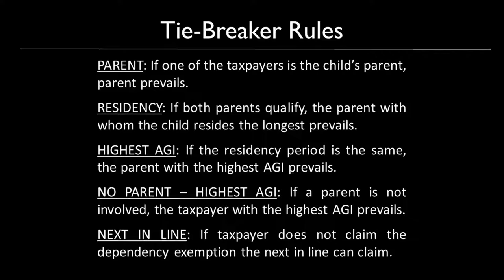There are tiebreaker rules if a grandparent, a parent, another parent, or an uncle can all claim the qualifying child as a dependent. The first person who gets priority is the parent — if one of the taxpayers is a parent, the parent prevails. Next is residency: if both parents qualify, the parent with whom the child resides the longest prevails and gets the dependency exemption. If the residency period is the same, the parent with the highest AGI prevails. If no parent is involved, the taxpayer — uncle or grandparent — with the highest AGI then prevails.